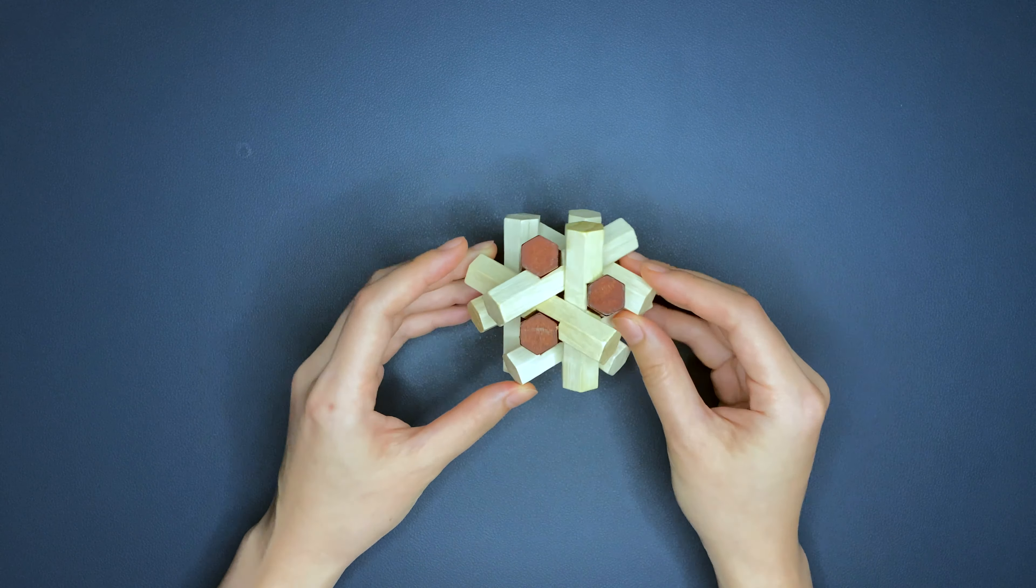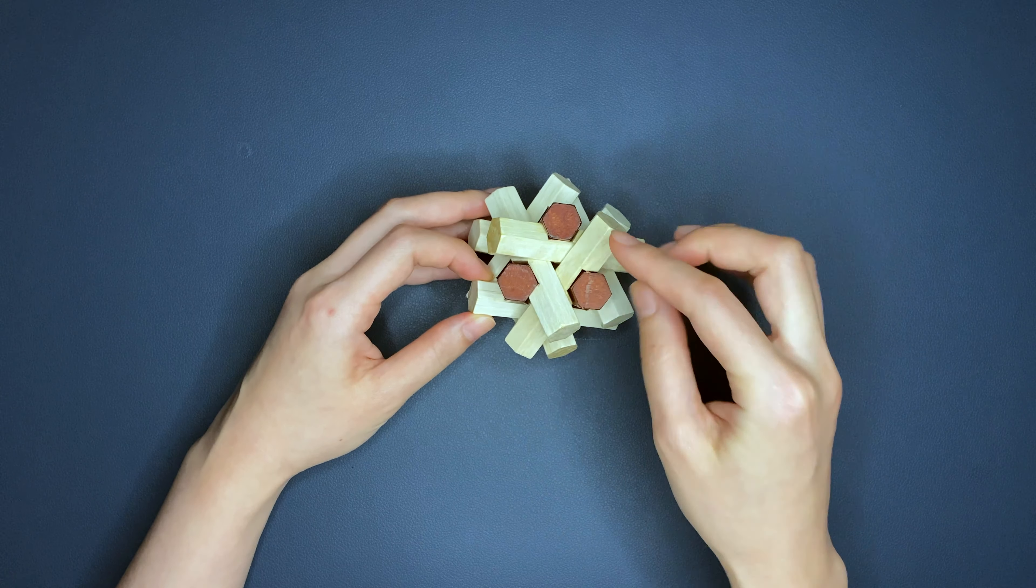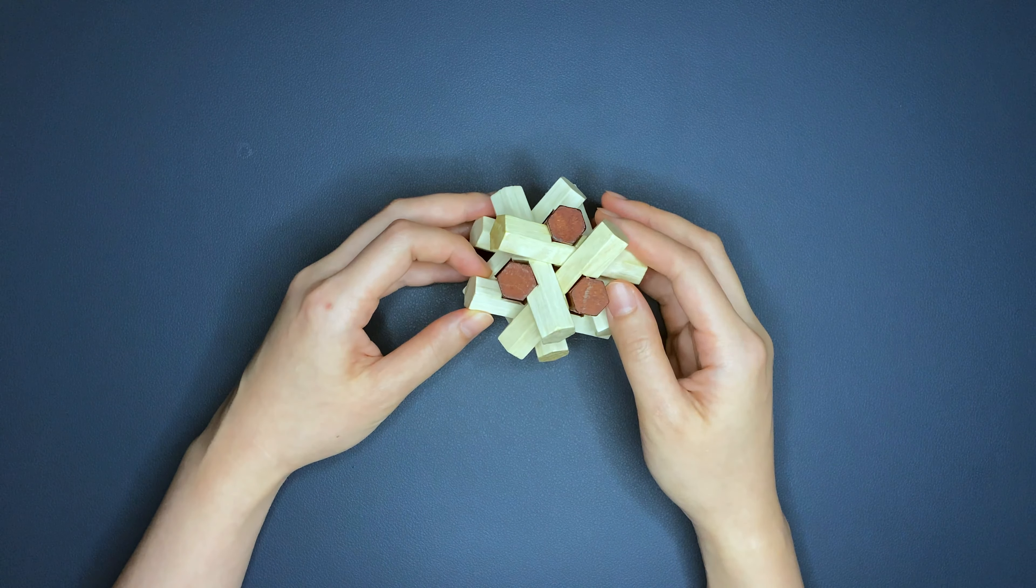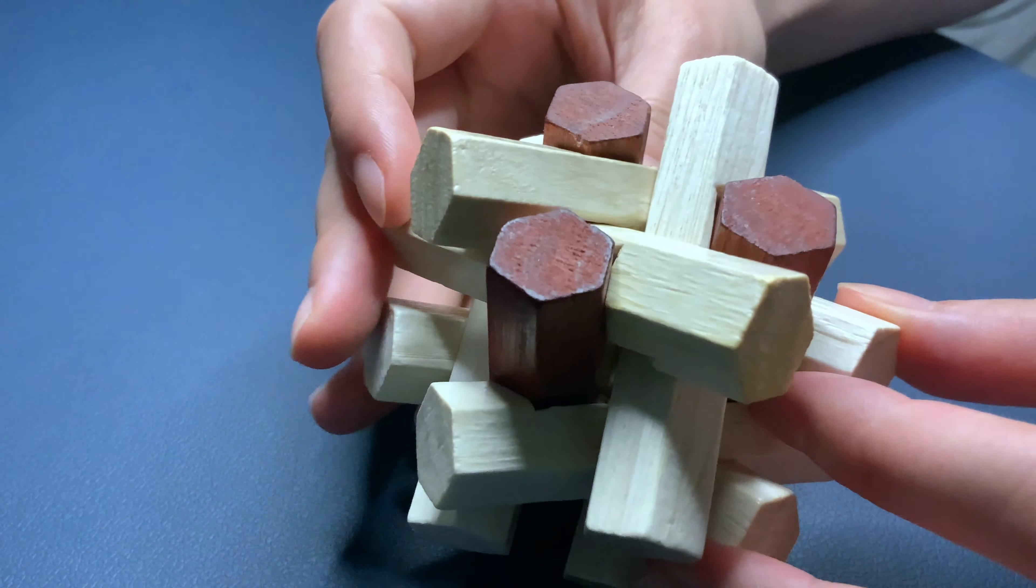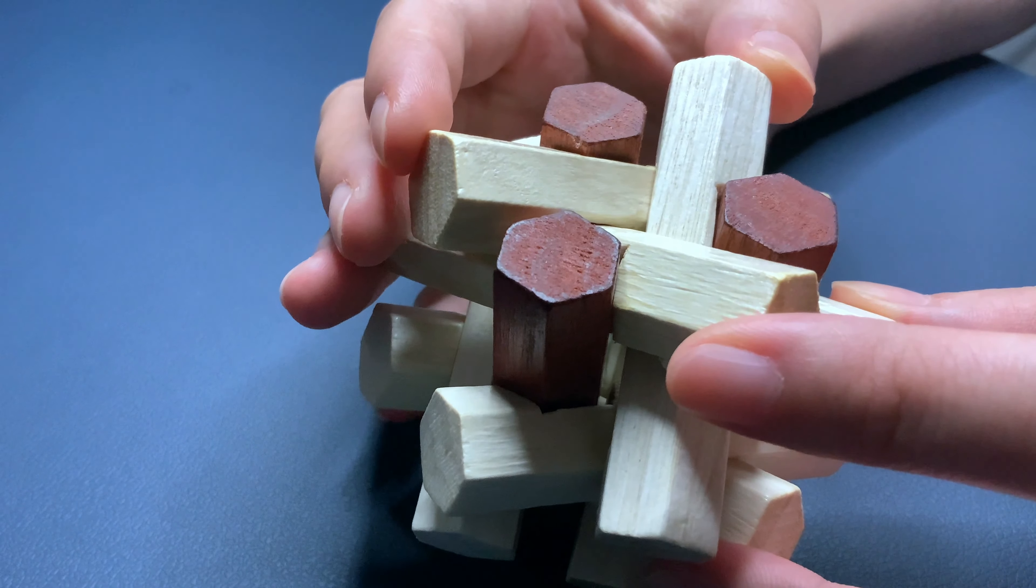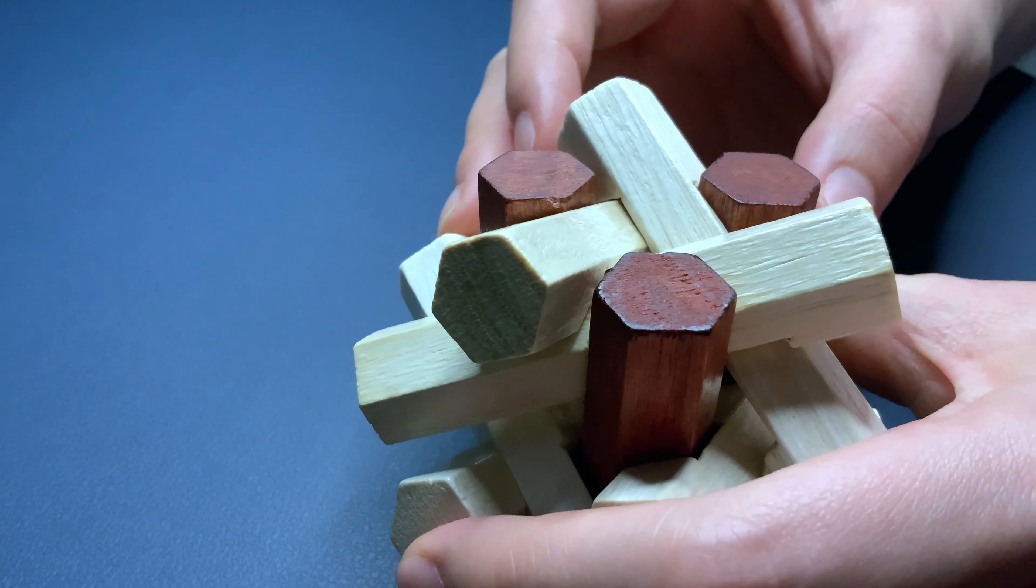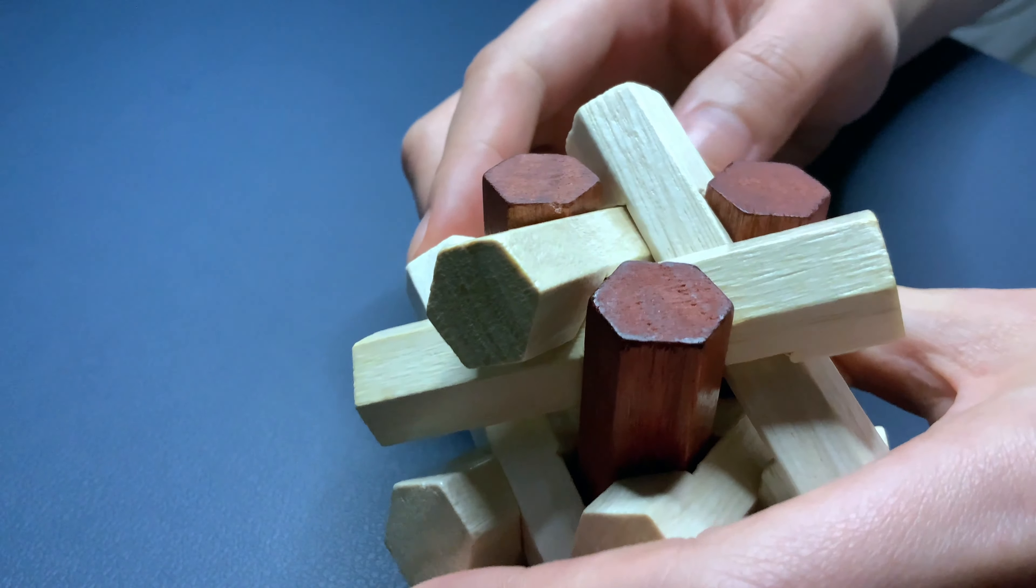So to take it apart, you basically need to take the top three pieces off at the same time. So as you can see here, the top three pieces are interlocked with each other. And so you need to hold the bottom and take the top three off at the same time.